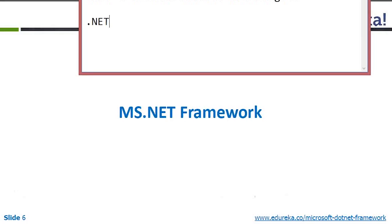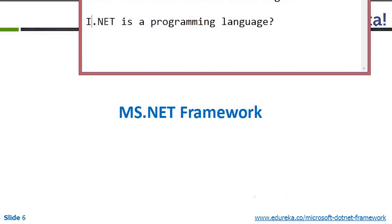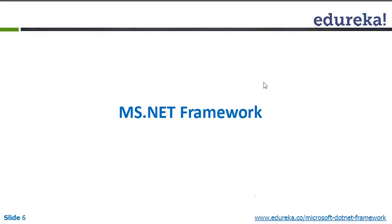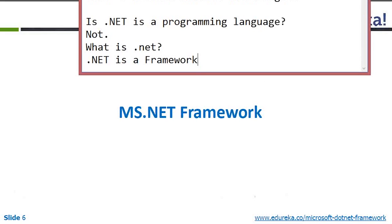Everybody feels that .NET is a programming language. Let me ask you a question: is .NET a programming language? Absolutely not. .NET is not a programming language. Then what is .NET? We will be calling .NET a framework. .NET is not a programming language — .NET is a framework. I would like to confirm: .NET is not a programming language by itself.